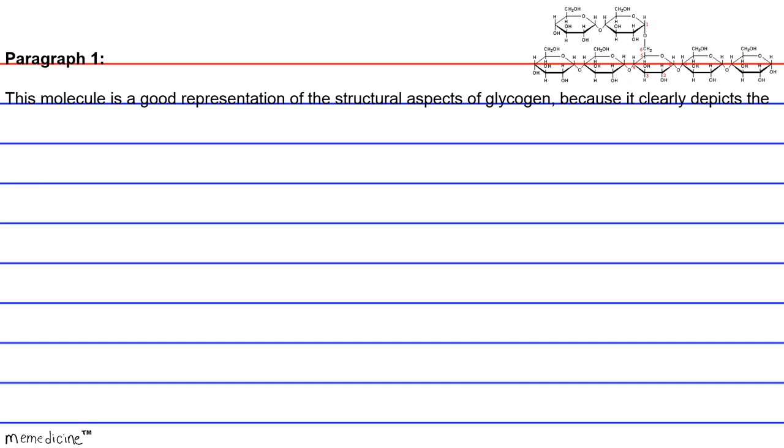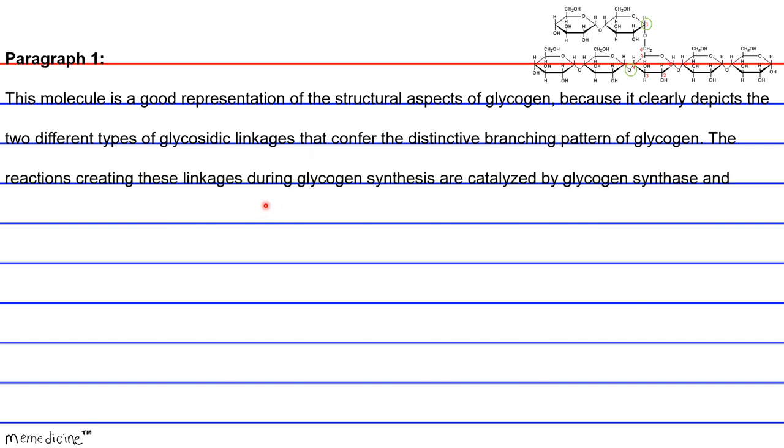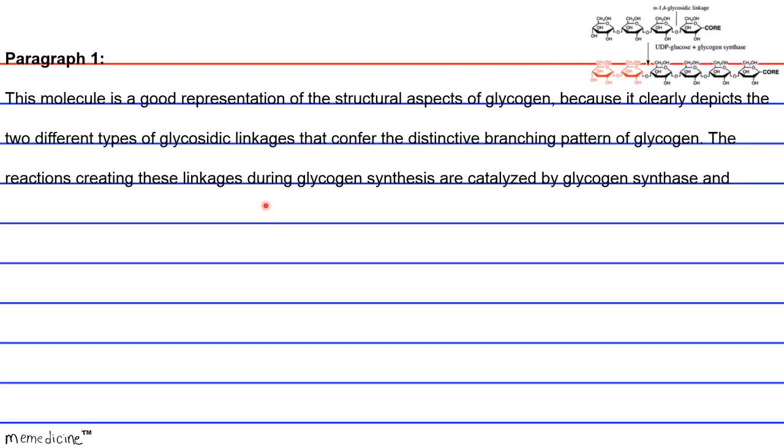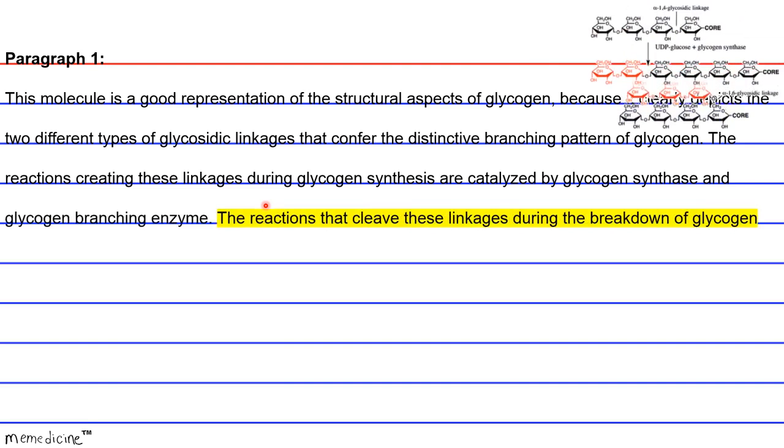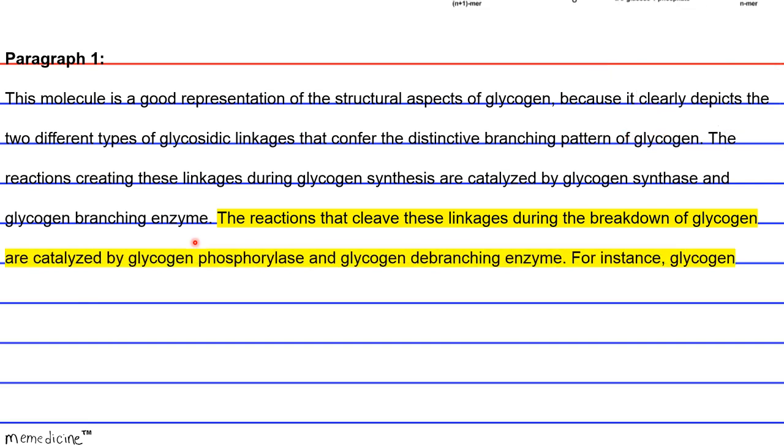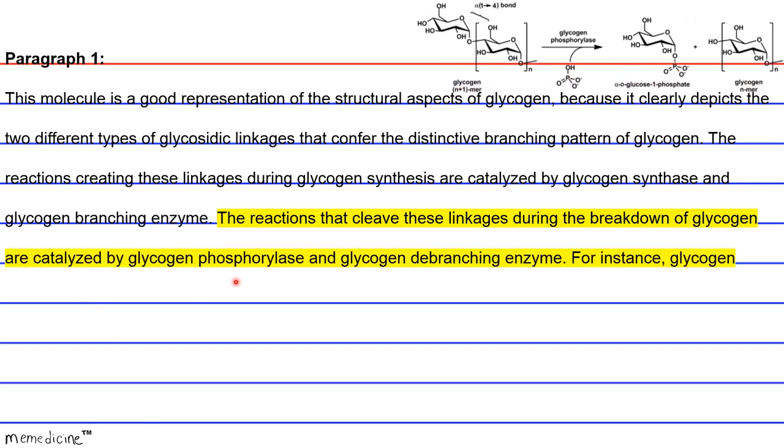Paragraph 1. This molecule is a good representation of the structural aspects of glycogen because it clearly depicts two different types of glycosidic linkages that confer the distinctive branching pattern of glycogen. The reactions creating these linkages during glycogen synthesis are catalyzed by glycogen synthase and glycogen branching enzyme.